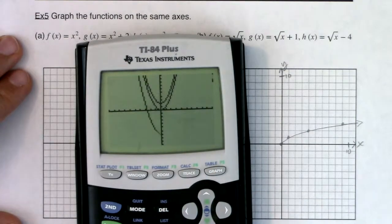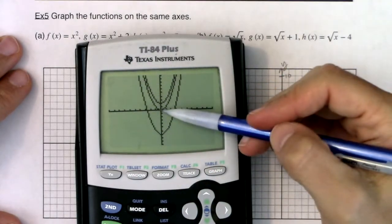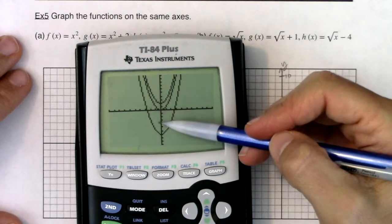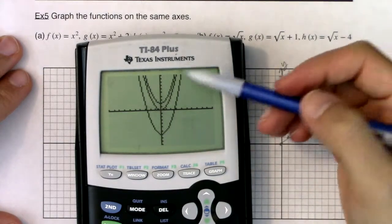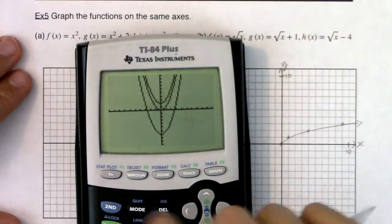Alright. So when I go to graph it, you can see I have this parabola, right? Now you can see the vertex has been dropped down seven units because I have a vertex at zero, negative seven.